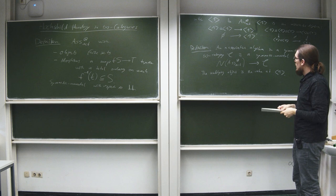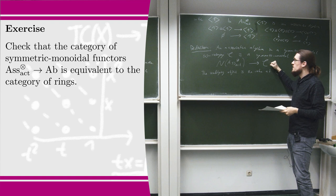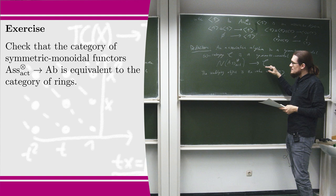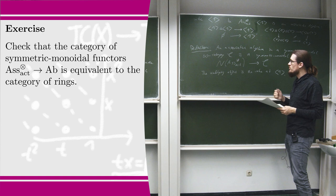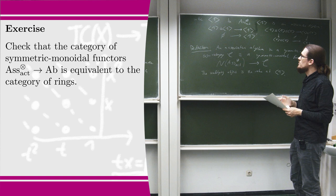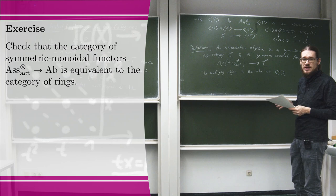This is a way to make precise the vague intuitive idea that in the infinity world an associative algebra should have all these kinds of higher coherences — they're simply encoded in the nerve of this one-category. As a good exercise, you should check that if C is the one-category of abelian groups with monoidal structure given by the tensor product, then the data of such a functor is the same as a ring — there's an equivalence of categories between symmetric monoidal functors from Assoc⊗ to abelian groups and the category of rings.